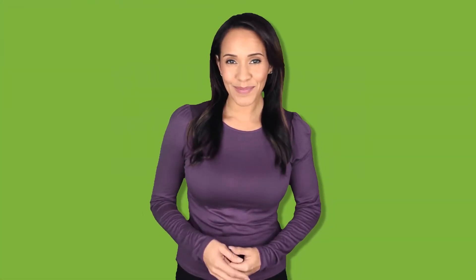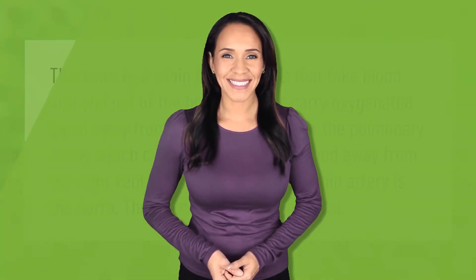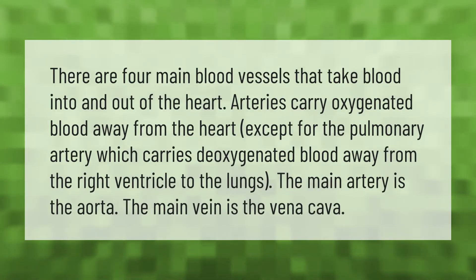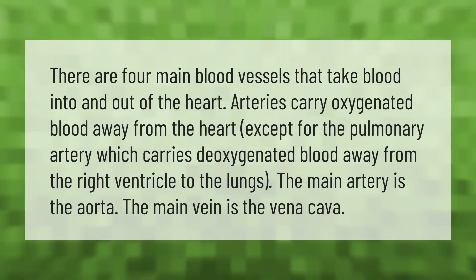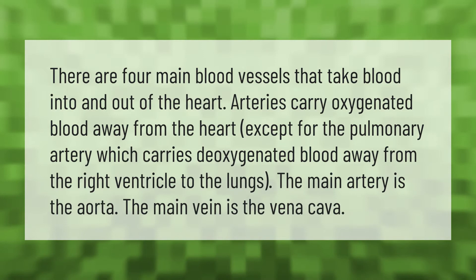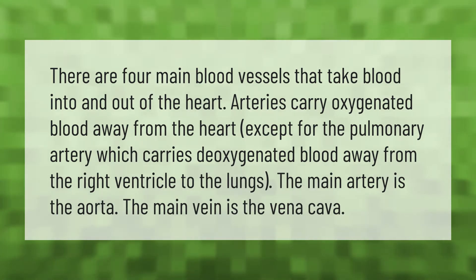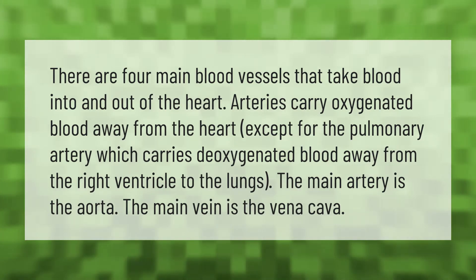There are four main blood vessels that take blood into and out of the heart. Arteries carry oxygenated blood away from the heart, except for the pulmonary artery, which carries deoxygenated blood away from the right ventricle to the lungs. The main artery is the aorta; the main vein is the vena cava.